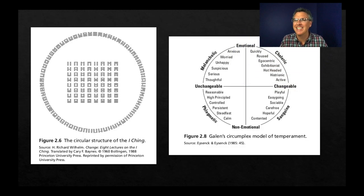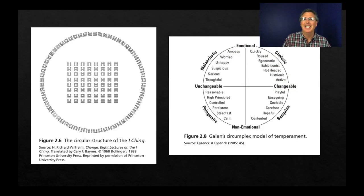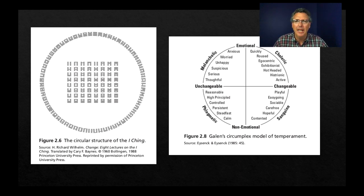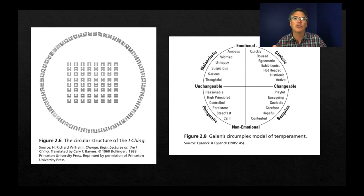And that's this idea of what we're going to call a circumplex — models that somehow try to capture psychologically relevant things in circular-type diagrams.